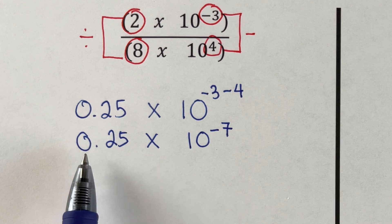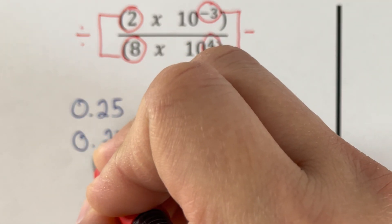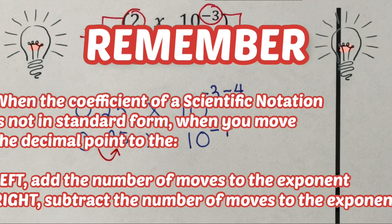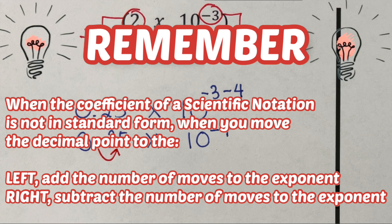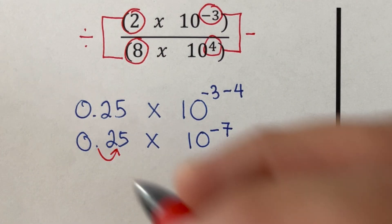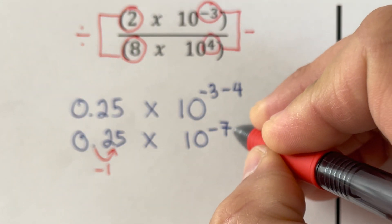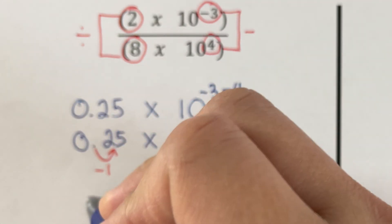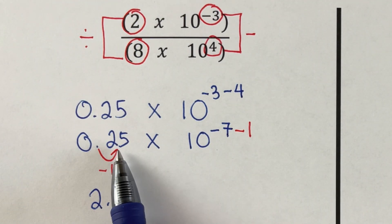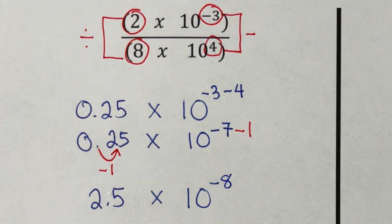Notice again that 0.25 is not in standard form — it has to be between 1 and 9.9999. Since it's less than 1, we move the decimal point to the right. When you move the decimal point to the right, subtract the number of moves from the exponent. Moving it one place gives us 2.5, so we subtract 1 from the exponent: negative 7 minus 1 is negative 8. The final answer is 2.5 times 10 to the power negative 8.